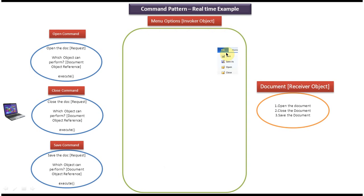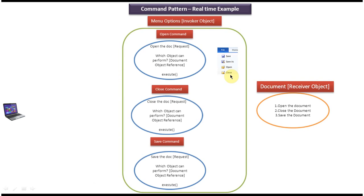Here you can see a file menu — it has save, save as, open, and close. These command objects will be sent to the invoker object. So whenever the user clicks on open, it will use the open command object's execute method, which will use the document object reference — the receiver — and call the open document method to open the document.